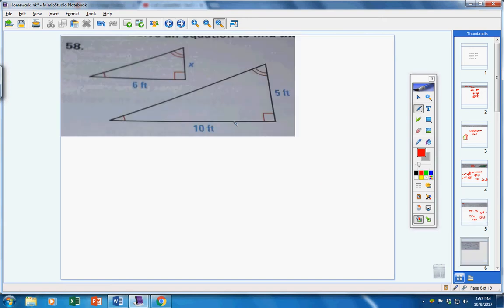Number 58. Write and solve an equation to define the length of the side marked x. These two triangles are similar, which means their sides increase and decrease proportionally. I can say 6 changes to 10 as x changes to 5. Now, cross multiply. 10 times x is 10x, 6 times 5 is 30. Divide both sides by 10. And x equals 3. So, this length right here would be 3. Pretty simple.